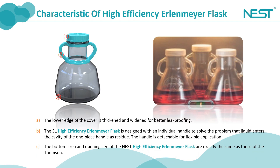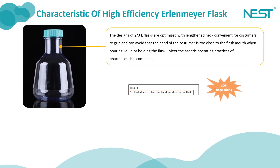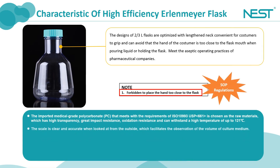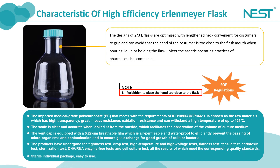Major optimizations of our products are based on client feedback, and we are grateful for all clients who have helped us improve our products. The 2L and 3L high-efficiency Erlenmeyer flasks have no handle, and the user should hold the bottleneck when pouring. Many pharmaceutical companies have stipulated in their SOPs that it's forbidden to place the hand too close to the flask opening to prevent contact risks. The lengthened bottleneck design of the Nest flask has eliminated this risk.